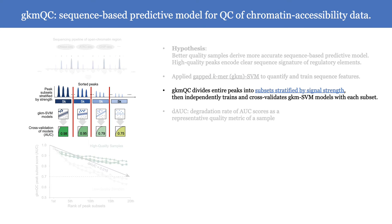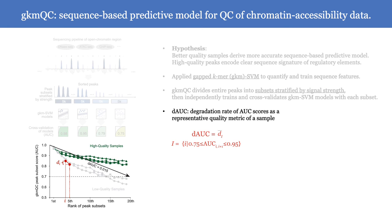Because of the different expectation of sequence prediction performance according to peak signal strengths, GKMQC divides the entire peaks into subsets stratified by signal strengths, then independently trains and cross-validates GKM-SVM models with each subset. Finally, GKMQC presents the degradation of AUC scores, called DAUC, as the representative quality metric of a sample.